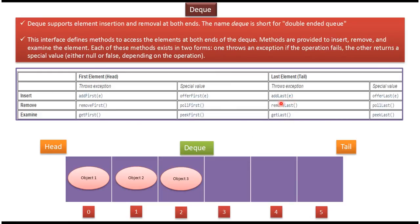To add an element at the tail side, we have two methods: AddLast and OfferLast. If the operation fails, the AddLast method throws an exception. If the operation fails, the OfferLast method returns FALSE.